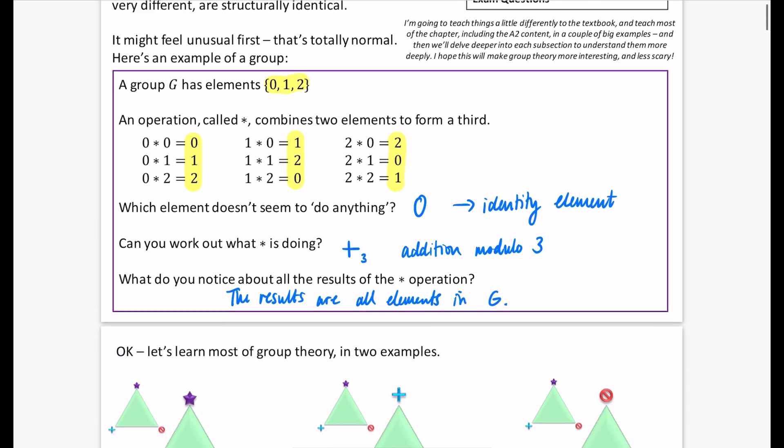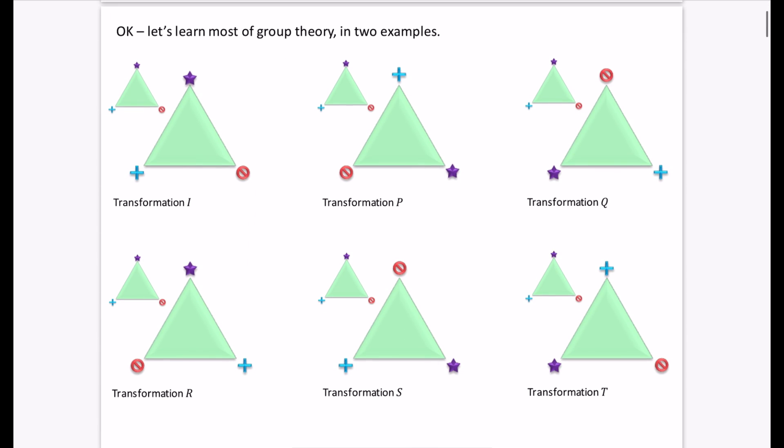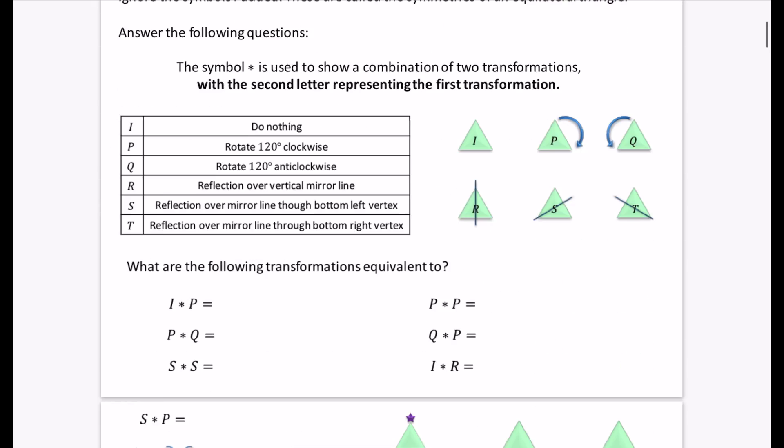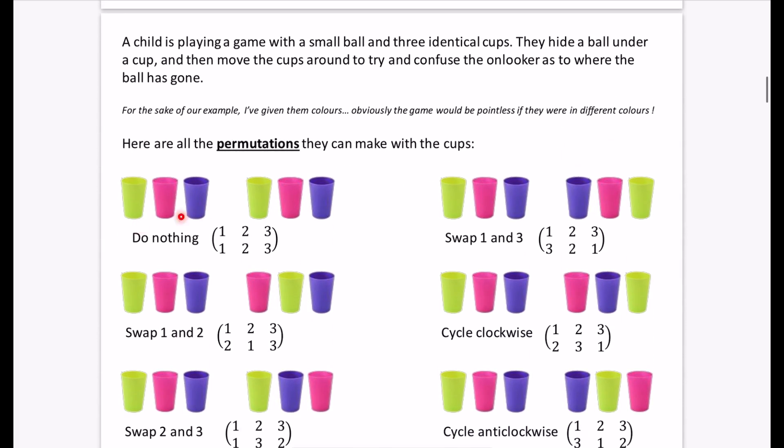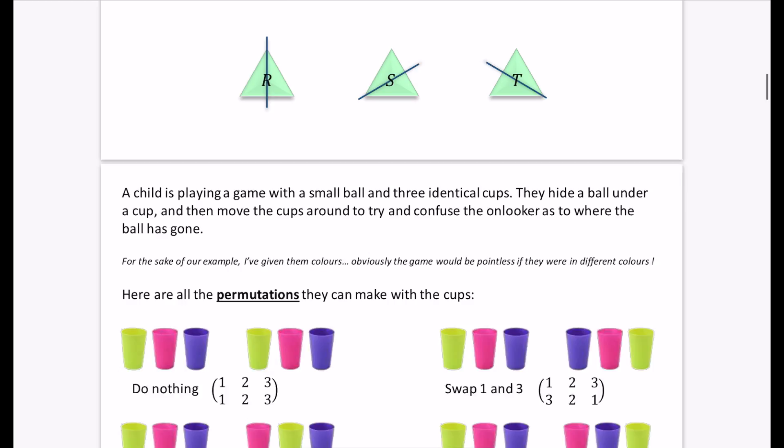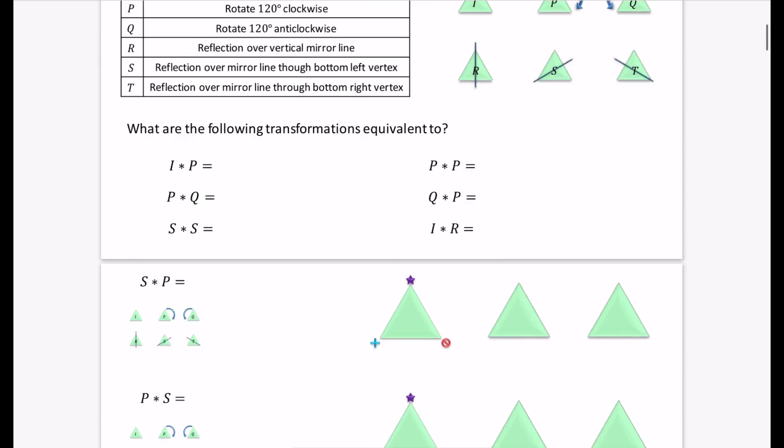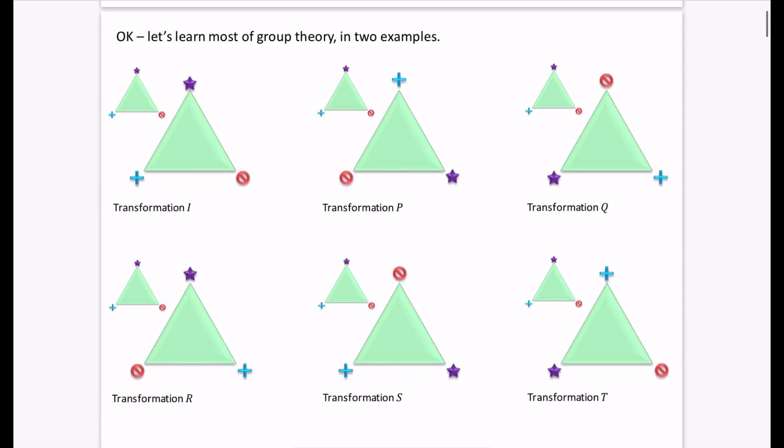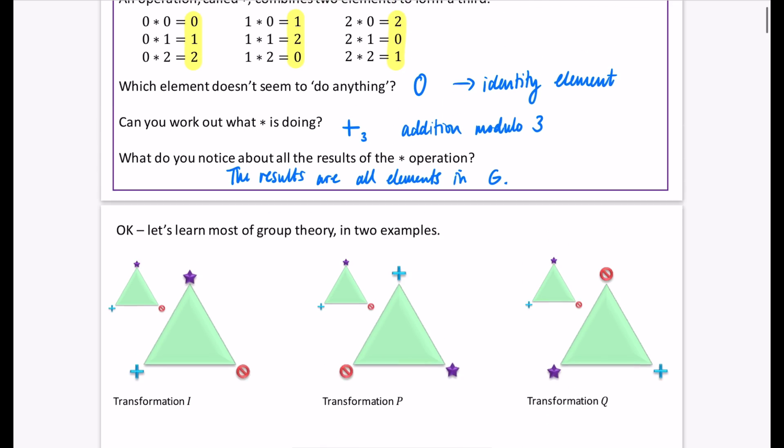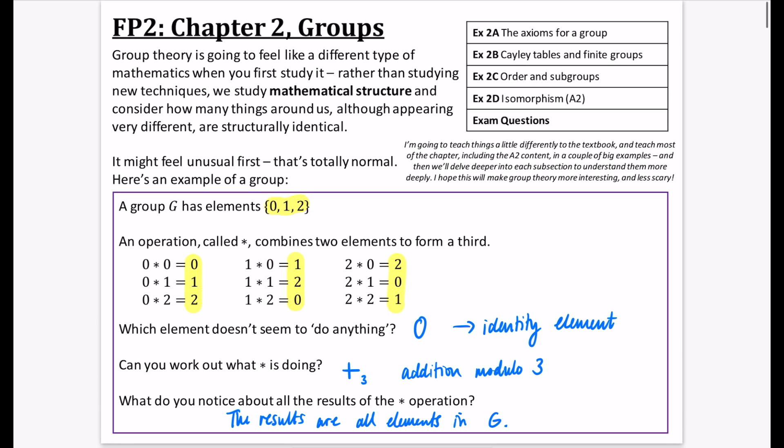So if you stick with me in the next video, we're going to be having a look at an example to do with transformations of triangles, and then we're going to be having a look at an example to do with a game with cups where you are shuffling cups around. We're going to try and use this to demonstrate loads of the properties of group theory so that when we learn the properties in a little bit more detail, it should make way more sense and hopefully will make group theory much more interesting as well.